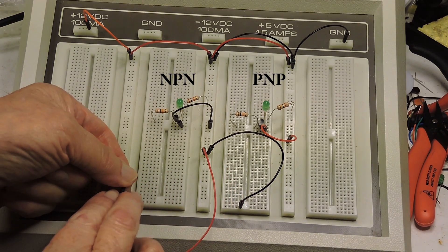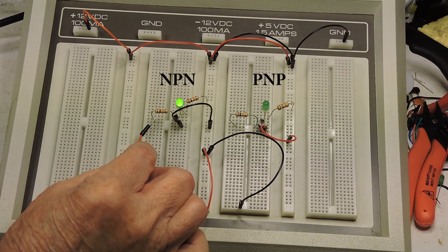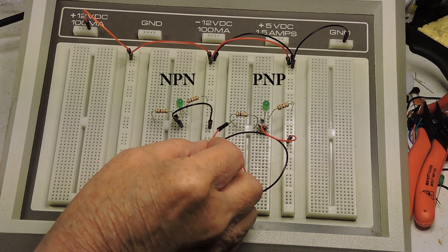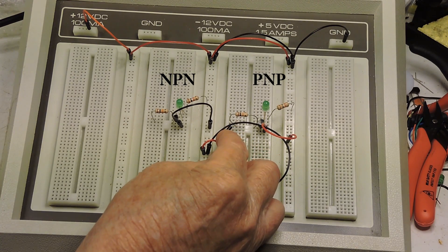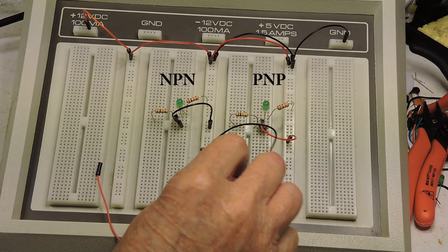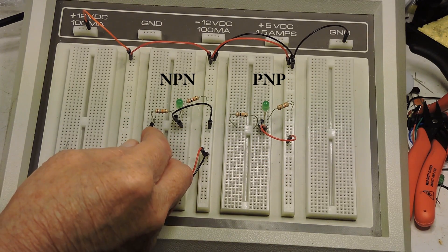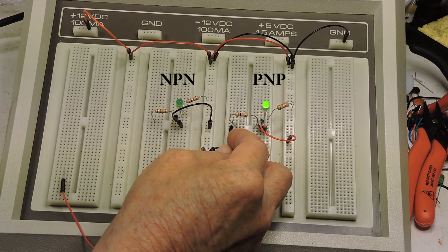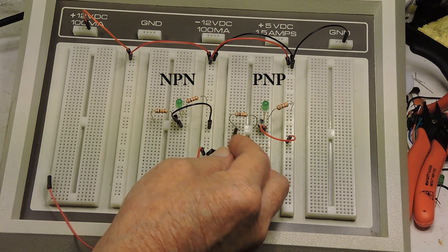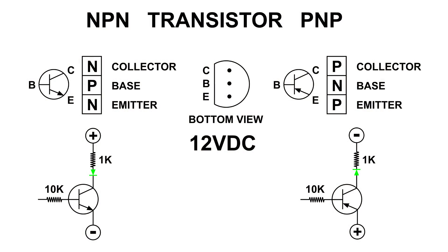Now I'm going to hook up the positive voltage to the base of the NPN transistor — and it lights. When I touch the base of the PNP transistor, nothing happens. Now here's the negative voltage on the NPN — nothing happens. When I applied a positive voltage to the base of the NPN, which is P material, the diode lights. But when I applied a negative voltage to it, nothing happened — the diode was not lit.